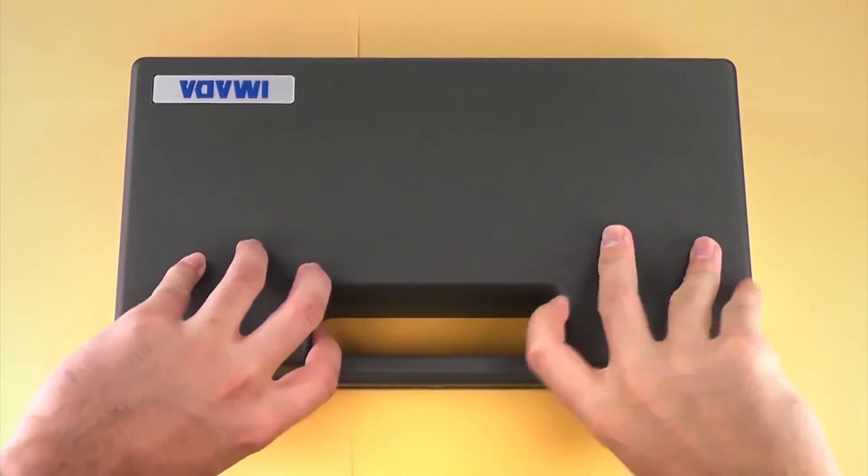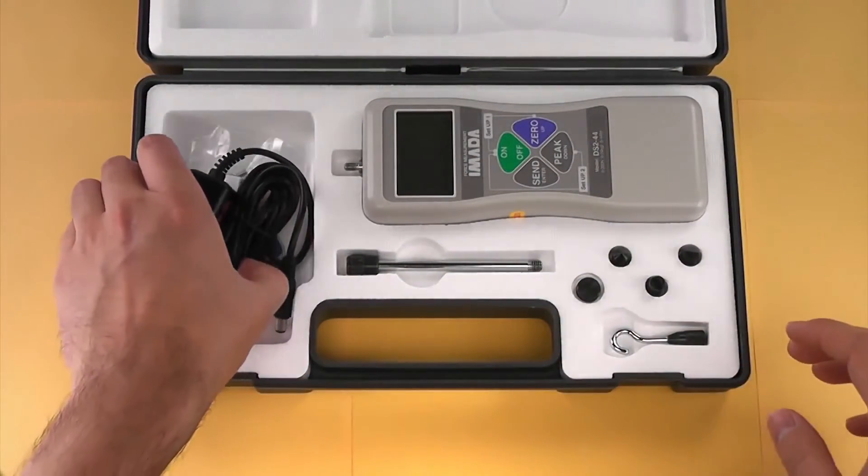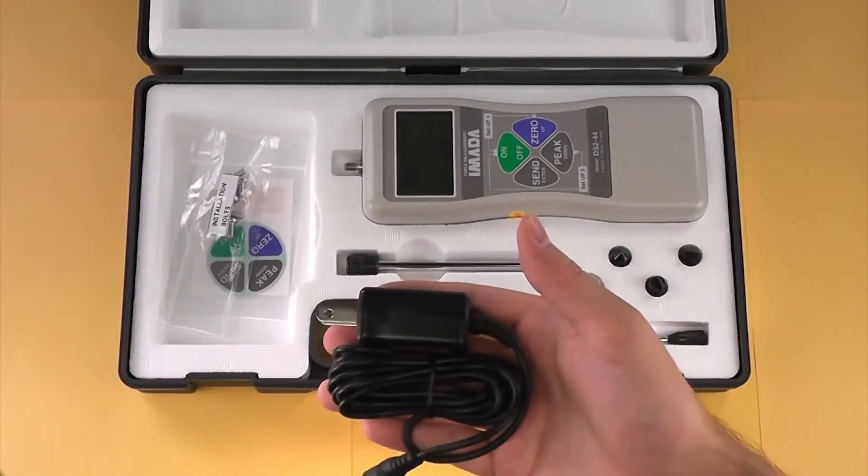The DS2 Force Gauge Kit includes a number of accessories and attachments. This is the AC adapter and charger for the gauge.